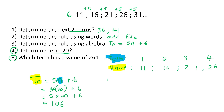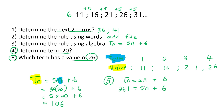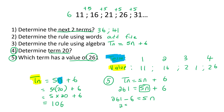With number five, they say which term has a value of 261 — so we put 261 as the yellow one. We want to get n by itself, so we take the plus six to the other side, making it minus: 261 minus 6 is 255. Then we divide both sides by five, and those fives cancel, leaving us with n = 51.